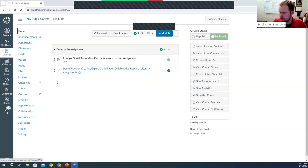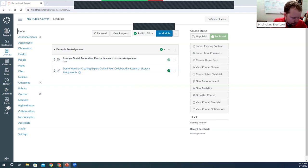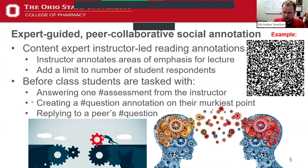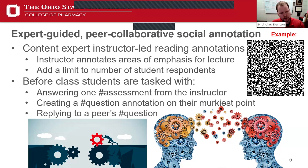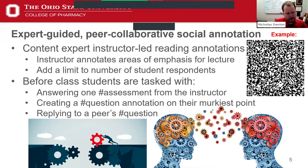Once you log into that Canvas page, you'll be able to see the example social annotation cancer research literacy assignment. Instead of just putting the research paper on Hypothesis and saying 'go read it and annotate as you see fit,' I really wanted to provide students with some sort of content expert guidance through the research paper that helps them recognize points of impact and close the knowledge gap just enough so that students can fill the gap using their own experience.